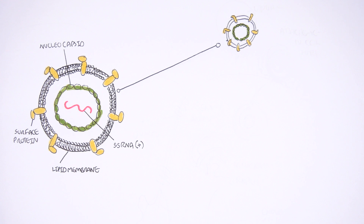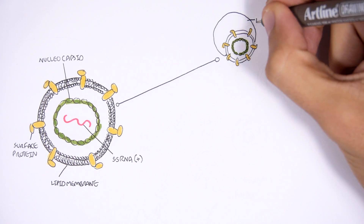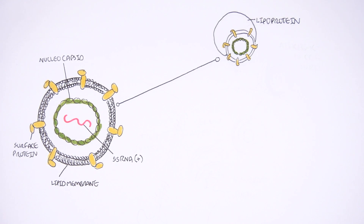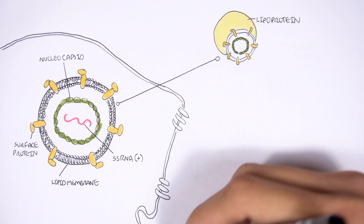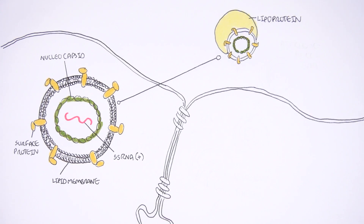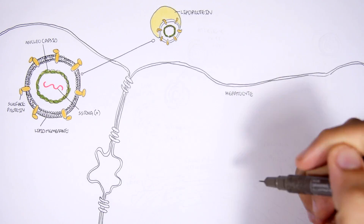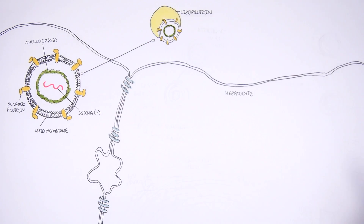It has been shown that the hepatitis C virus has the help of lipoproteins to enter the hepatocytes — the liver cells — because lipoproteins are usually recognized by the liver. Here are the hepatic cells, the hepatocytes, which are attached to each other by tight junctions.